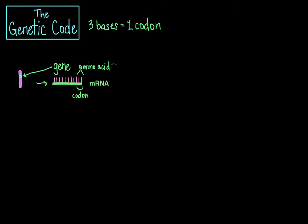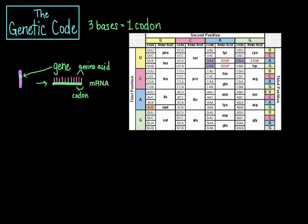The answer to that question is the genetic code. Here's the genetic code shown in table form. The table shows which amino acid each of the 64 codons encodes. For example, the codon CCG corresponds to proline, and if we take another codon, CGA, you can see that it corresponds to arginine.